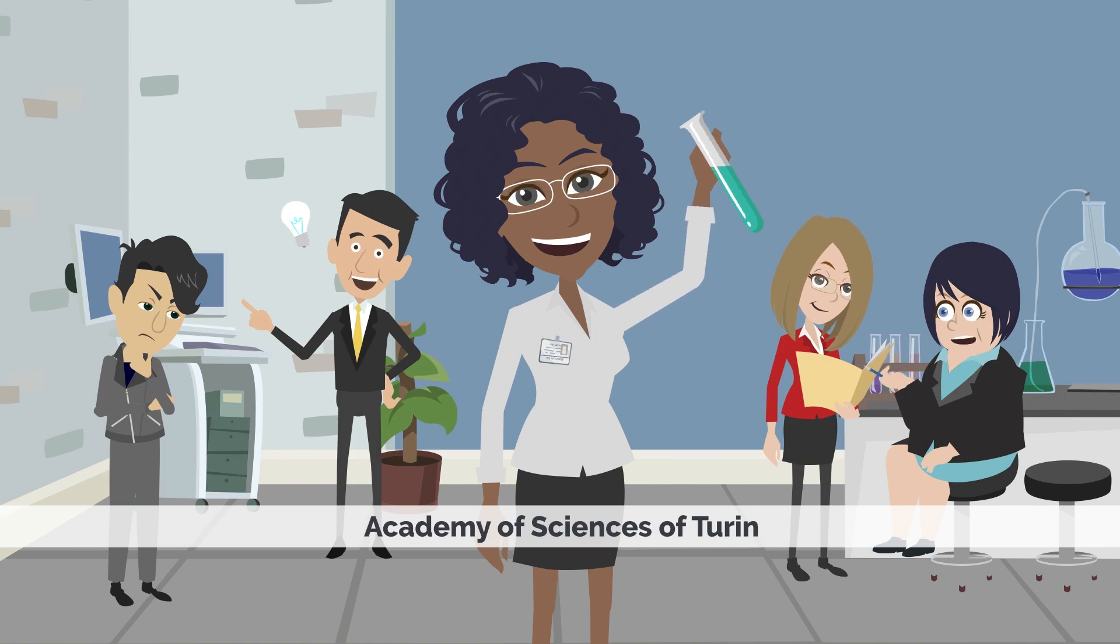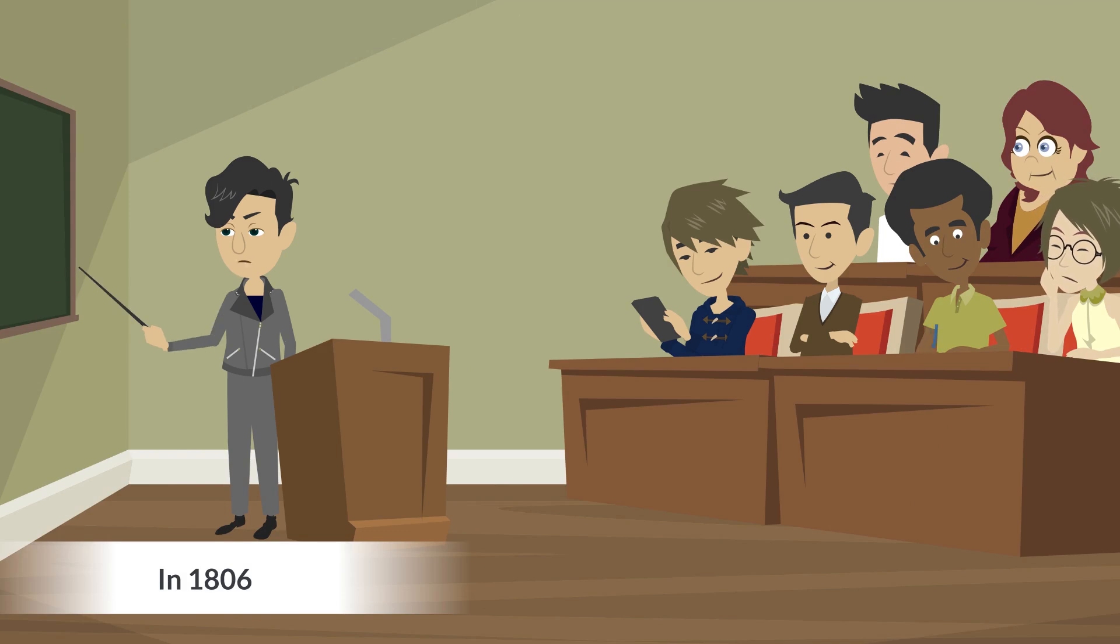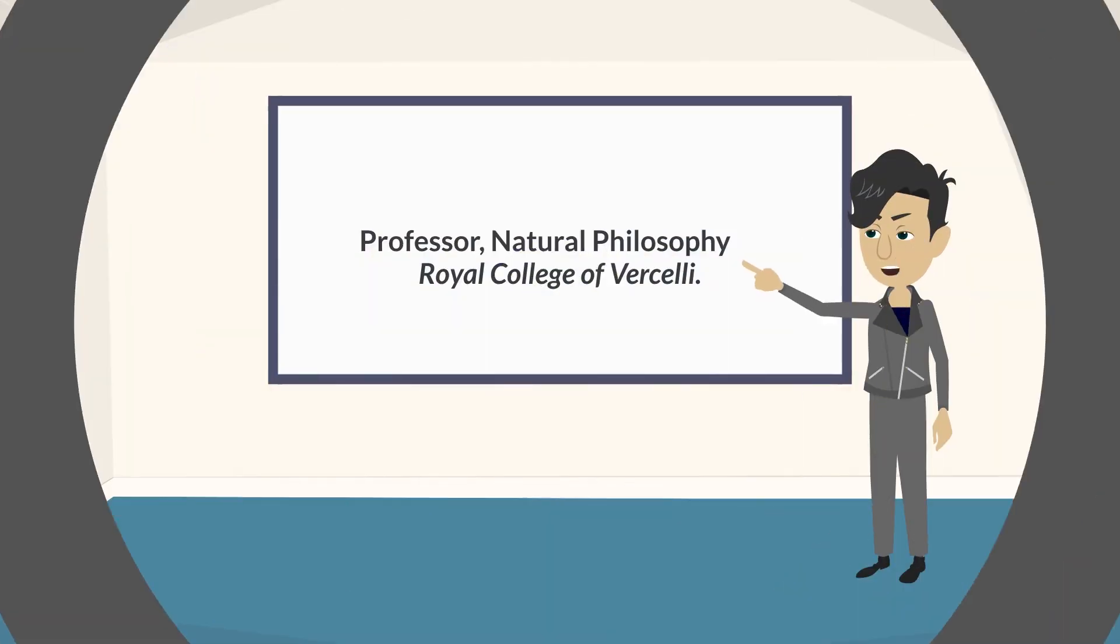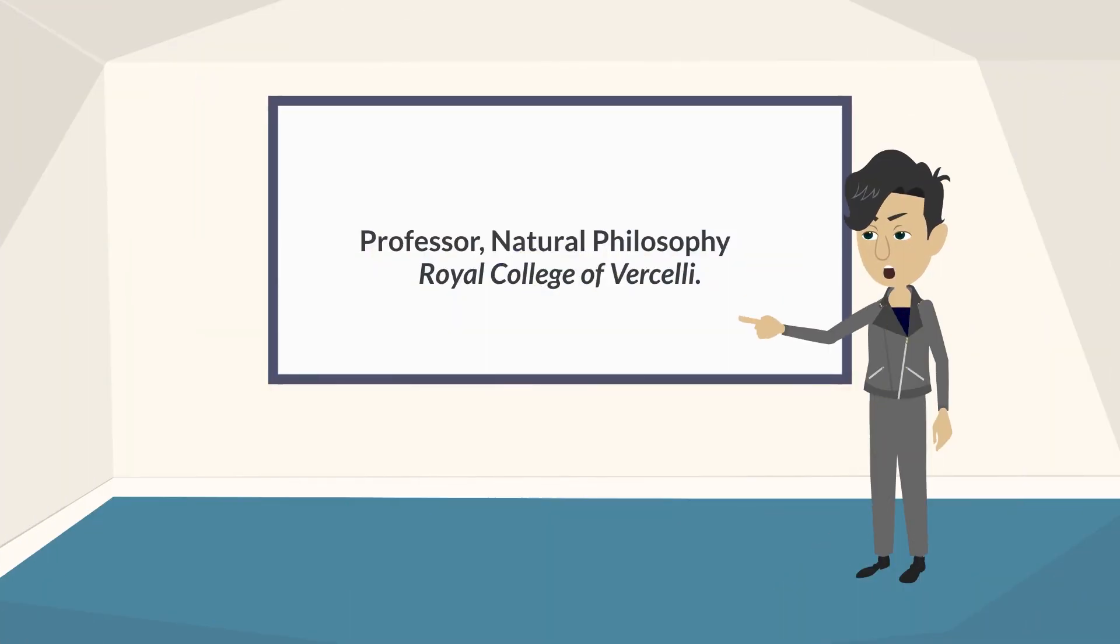In 1806, Avogadro moved into academics and began to teach physics and mathematics at a high school in Varisili Turin. In 1809, Avogadro became a professor of natural philosophy at the Royal College of Versili. He maintained this post until 1820.